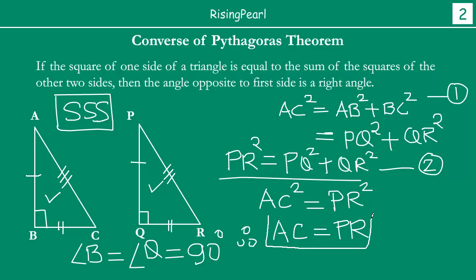We have actually proved that these two triangles are congruent. In congruent triangles, corresponding angles are equal. So angle B must be equal to angle Q. But angle Q by construction is 90 degrees, so angle B must be 90 degrees. This is the opposite or converse of Pythagoras theorem. We started with the fact that AC² = AB² + BC², and we have found out that angle B is indeed 90 degrees.